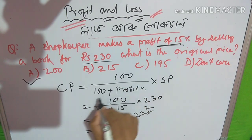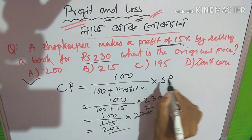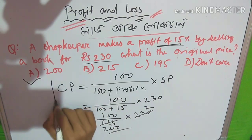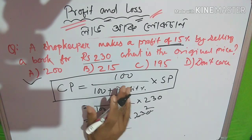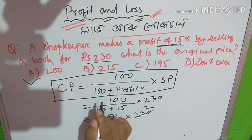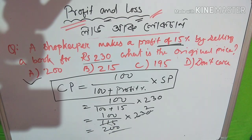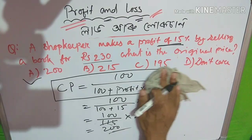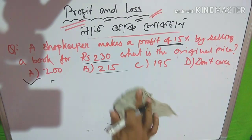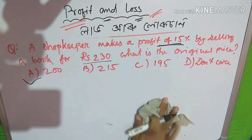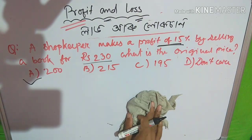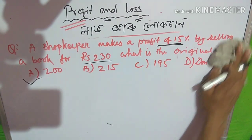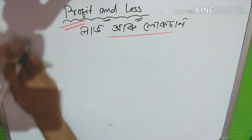100 divided by 100 plus profit percentage, into selling price. This formula is very good. I will also pay for your money. If you want to do it, you will be very happy to make the cost price.